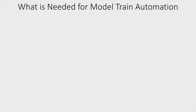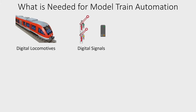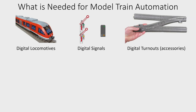Let's start by looking at what we need in order to do model train automation. First of all you need the locomotives. The locomotives must be digital so they can be automatically controlled. You need signals as well — they also need to be digital. Then of course your turnouts and accessories need to be digital.